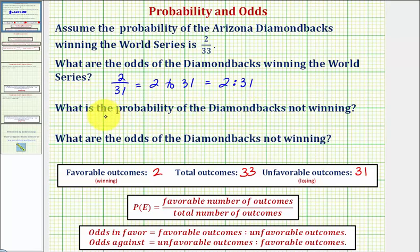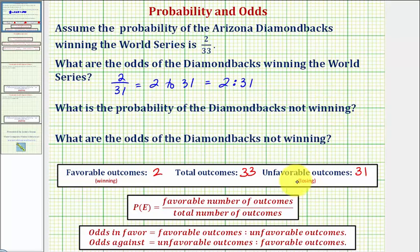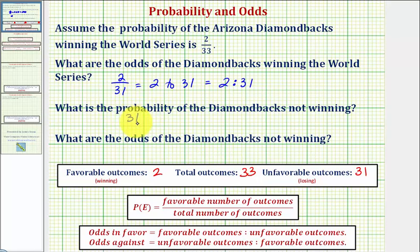The second question: what is the probability of the Diamondbacks not winning the World Series? This would be comparing the number of unfavorable outcomes to the total number of outcomes, which would be 31 divided by 33. So the probability of not winning is 31/33.